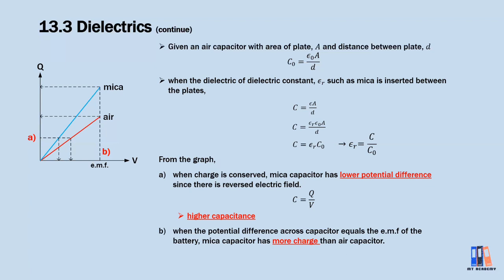Before we end, one question that may arise is: what does it mean when charge is conserved? There are two cases. First, when the capacitor is disconnected from any components including the battery. Second, when the potential difference across the capacitor has reached the same value as the EMF of the battery. The charging process of the capacitor will be further discussed at the end of this chapter.